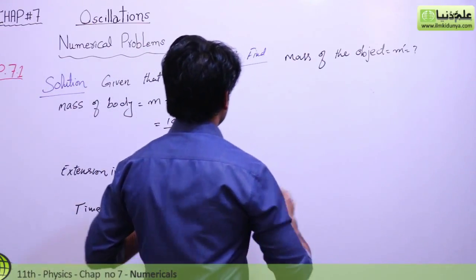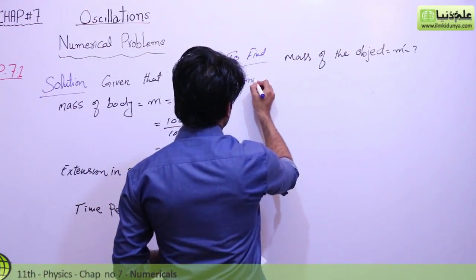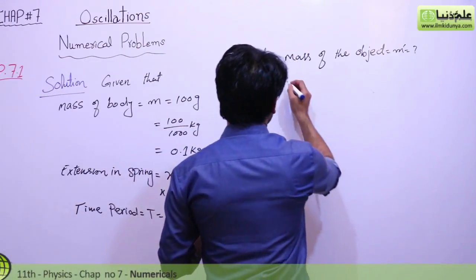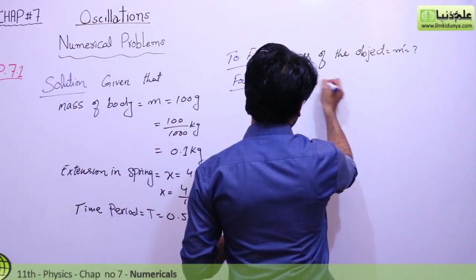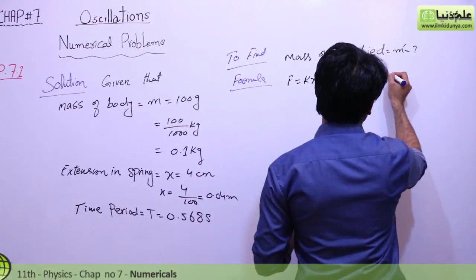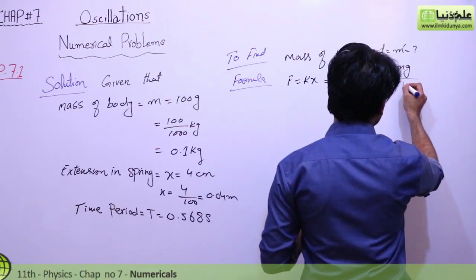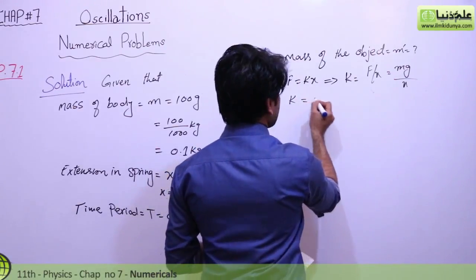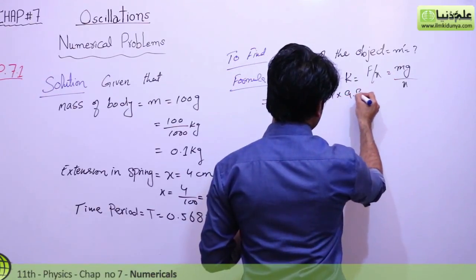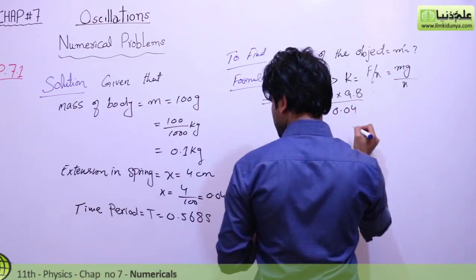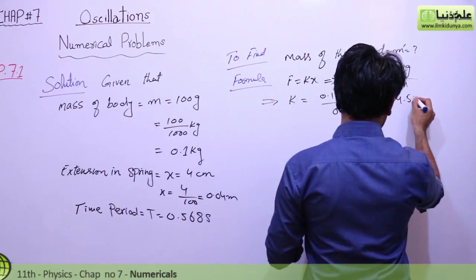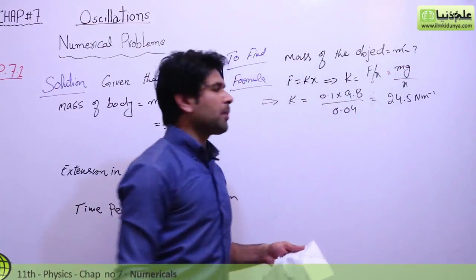We know the formula — we use Hooke's law: F equals kx. Here we find k first. k equals F over x. The gravitational force F equals mg, so k equals 0.1 multiplied by 9.8, divided by 0.04. When we solve it, k equals 24.5 newton per meter.